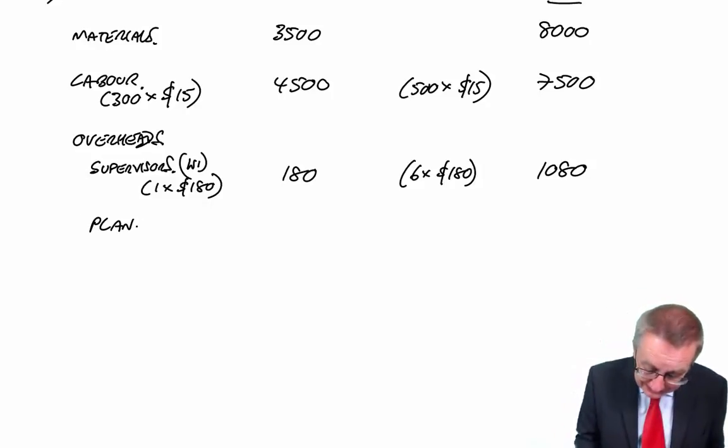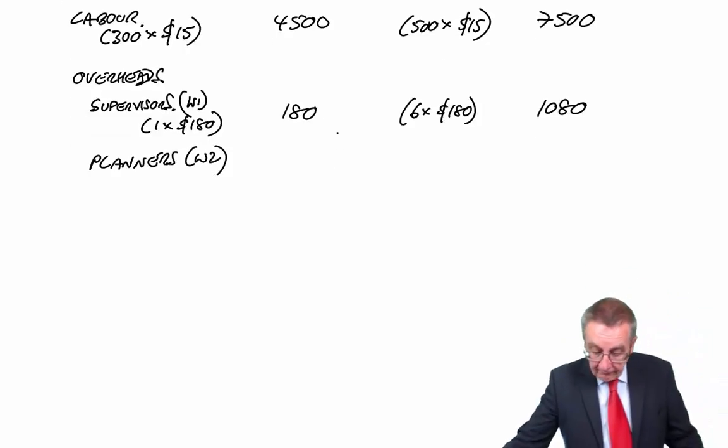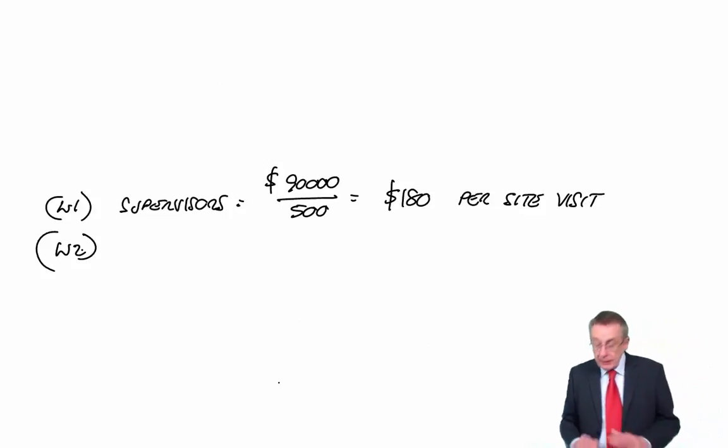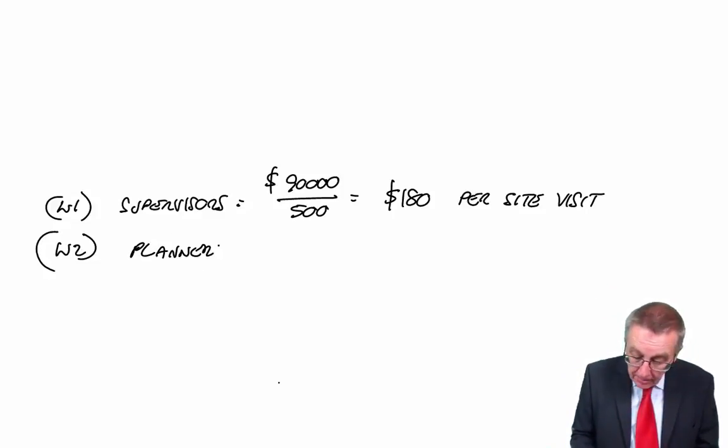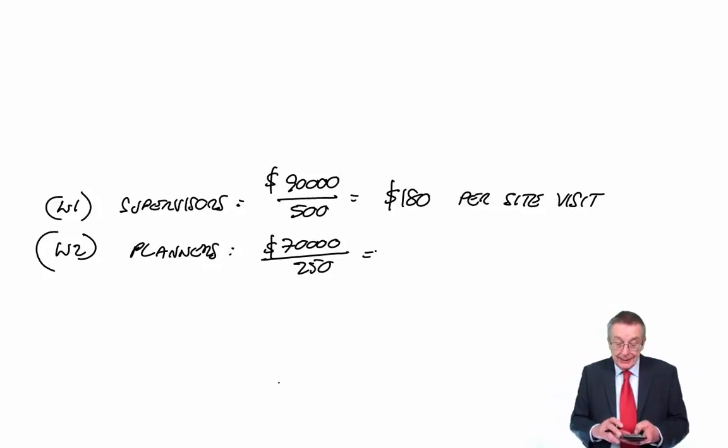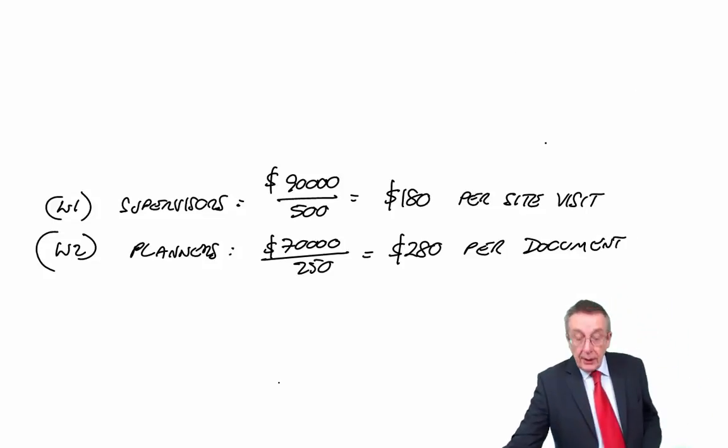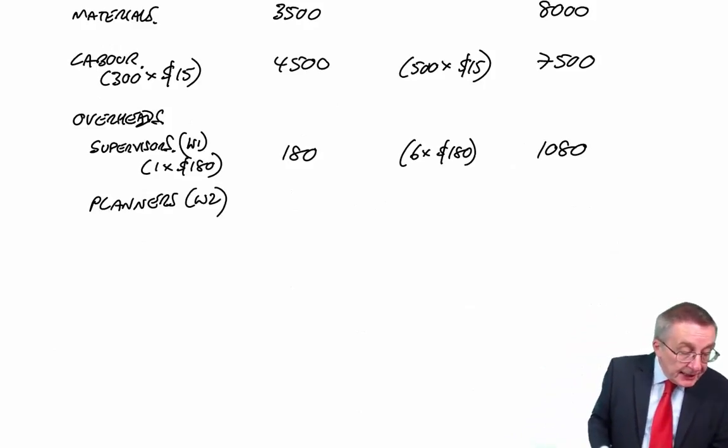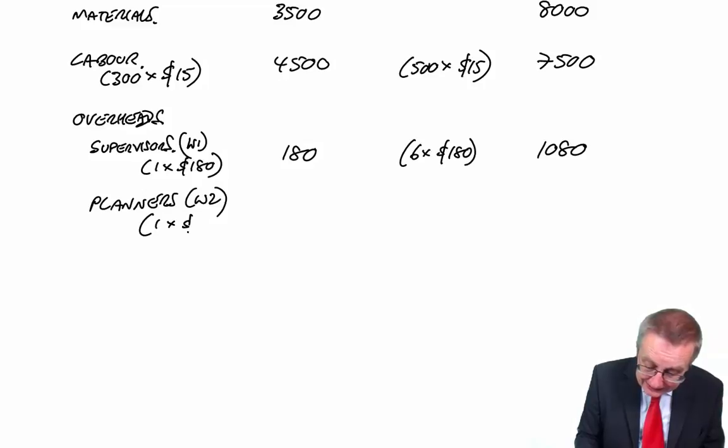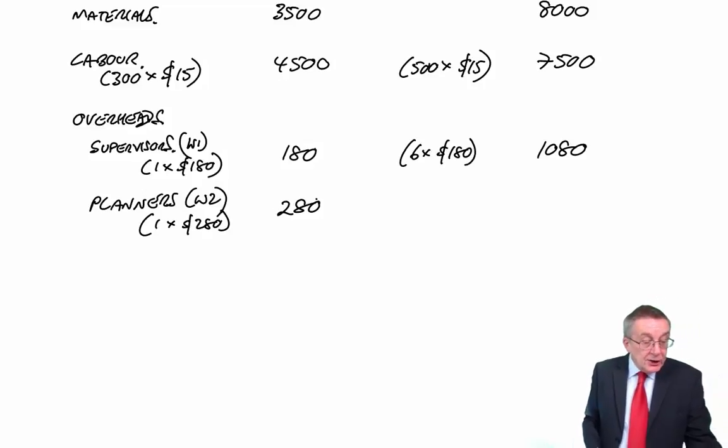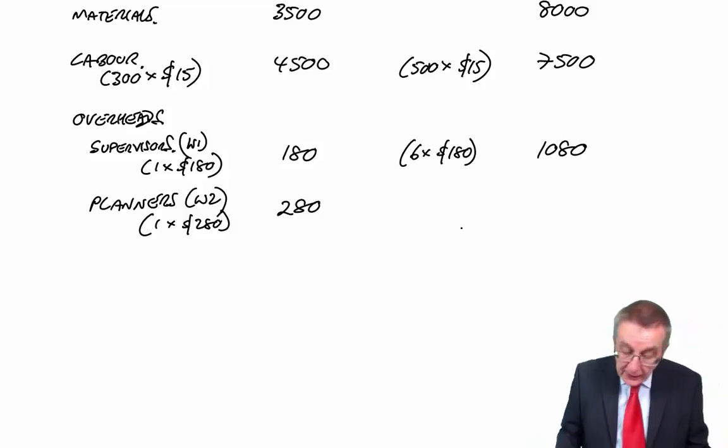What about the next one, planners? For planners, the total overhead is $70,000. The total number of documents, the activity, is 250, so that comes to $280 per document. Now we can go back to the cost card, because it tells us that each GC needs one planning document, $280. Each EX, five planning documents, $1,400.